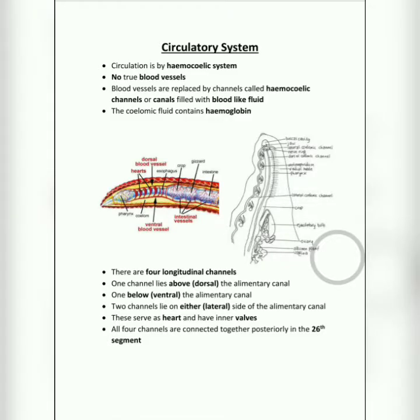Good morning students, today you will see about the next organ system of leech, that is the circulatory system. Normally, circulatory system we remember about heart, blood, blood vessels, and valves, but these leeches do not have blood, blood vessels, or heart. Instead they have a system called hemocelic system.